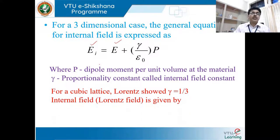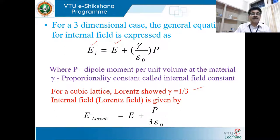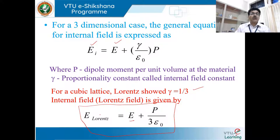For a cubic lattice, physicist Lorentz applied this equation to a three-dimensional cubic lattice and found the value of γ to be 1/3. Therefore, the above equation for the internal field, also named the Lorentz field, is given by E_Lorentz = E + P / (3ε₀), because γ = 1/3. This is the total equation for the internal electric field of a three-dimensional cubic lattice material.